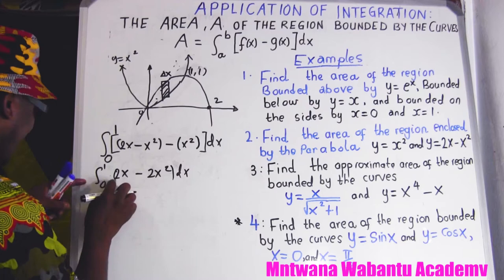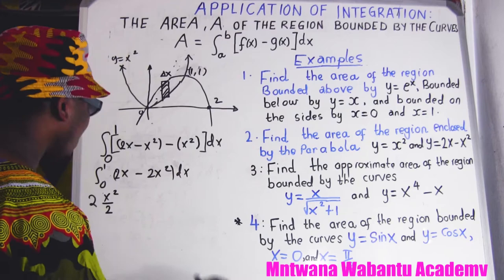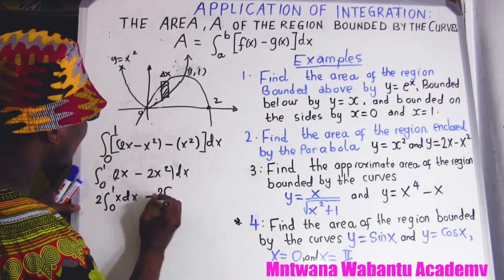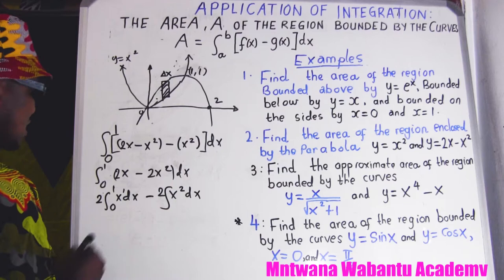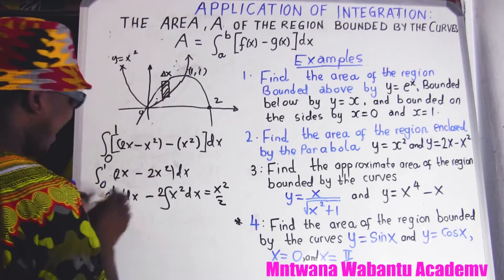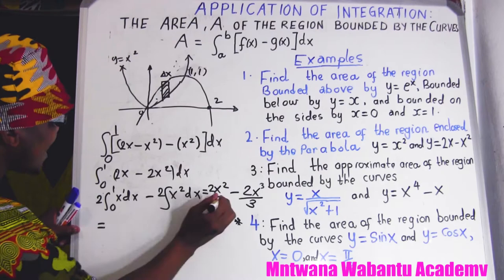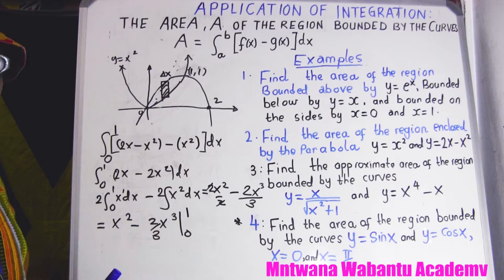Now integrate: take 2 outside for x to get 2 times x squared over 2, and for x squared add one to get x cubed over 3, multiplied by 2. So we get x squared minus 2 over 3 times x cubed, evaluated from zero to one. Substituting the upper limit one: one squared minus two thirds times one cubed equals one minus two thirds.